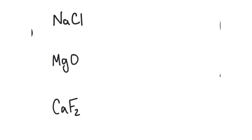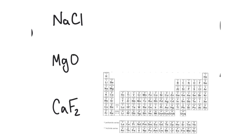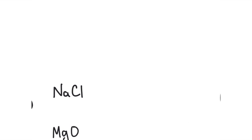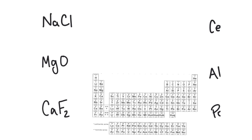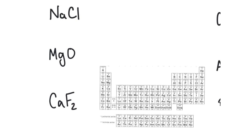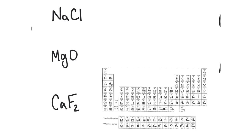Let's start with simple binary ionic compounds. I have three examples to look at, and I'll reference my periodic table as we go. I like to break things down into steps. For simple binary compounds: first, write the name of the cation exactly as it appears on the periodic table. Second, write the name of the anion and change the ending to '-ide' (I-D-E).